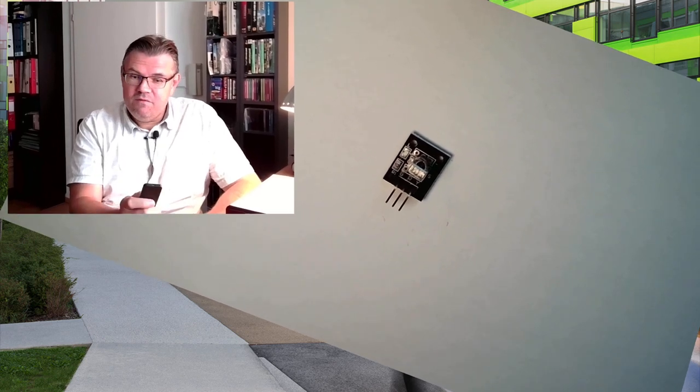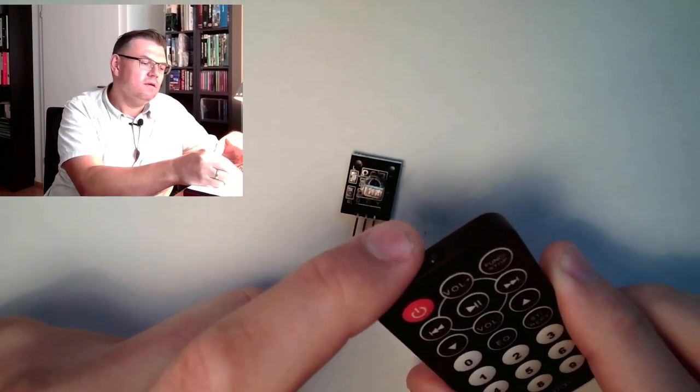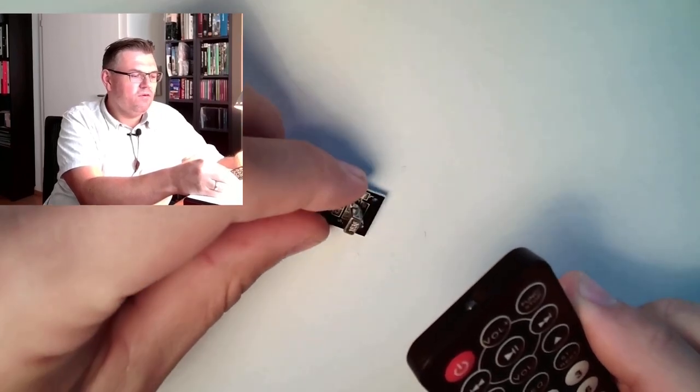And we have one infrared remote inside. You can see here, there is a little diode, this infrared diode. And we also have this, this is an infrared receiver.